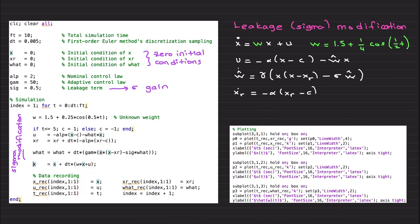For the sigma modification and e-modification, I'm using the same uncertainty and the same nominal controller with the same gamma. I'm going to vary sigma to give you a feeling for the sigma modification term while keeping everything else constant.